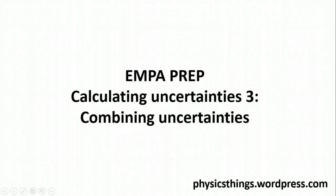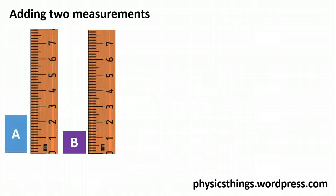Now we're going to move on to combining uncertainties. When you are getting your results to combine together through a calculation — or even just addition or subtraction — you need to have a way of working out what the overall uncertainty at the end is going to be. Let's take for example stacking two objects on top of each other and working out what the height of those objects will be.